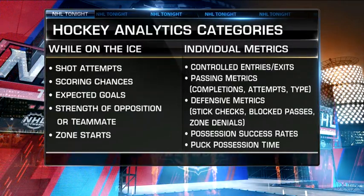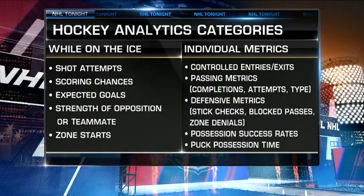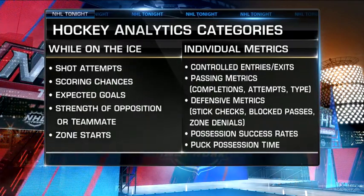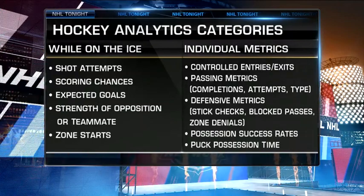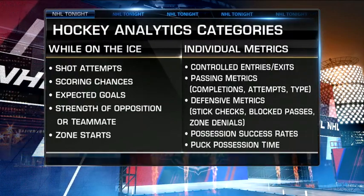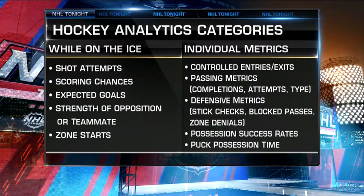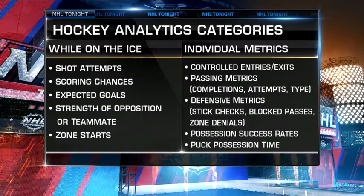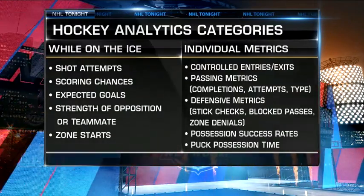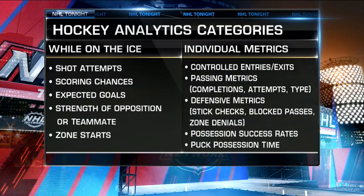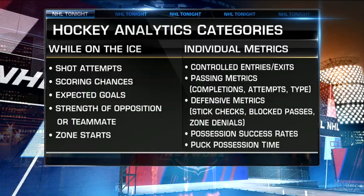For individual metrics, we identify what specific players do: entering the offensive zone with possession, exiting your zone with possession, passing metrics — how good you are as a passer, passing into the middle of the ice, the slot, stretch passes, outlet passes. Defensively, we look at stick checks, blocked passes, how active your stick is. Victor Hedman, who won the Norris Trophy, is one of the best — a great way to quantify an individual's defensive impact.